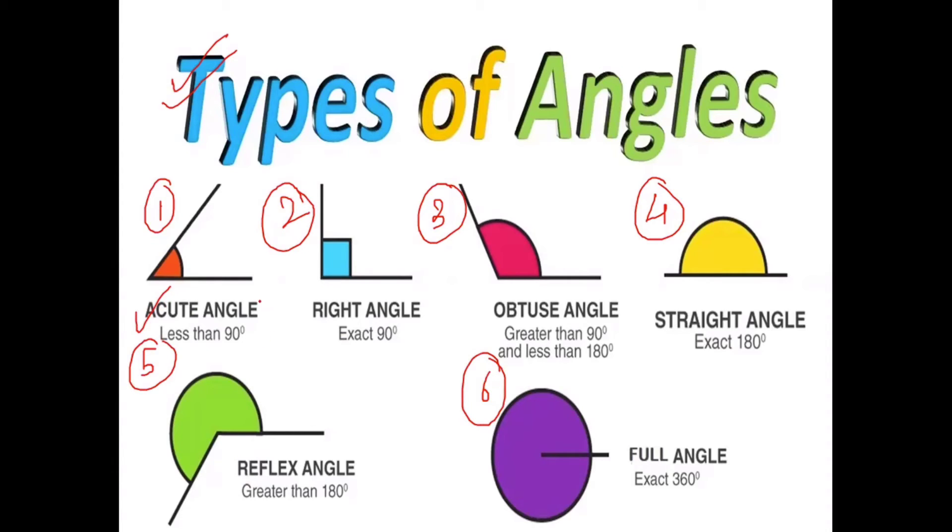Acute angle is less than 90 degrees. Right angle is exactly 90 degrees. Obtuse angle is greater than 90 degrees and less than 180 degrees. This means that if we have an angle called X, the X will lie between 90 degrees to 180 degrees.